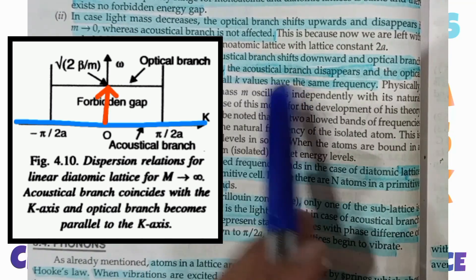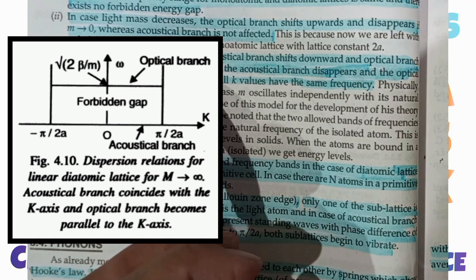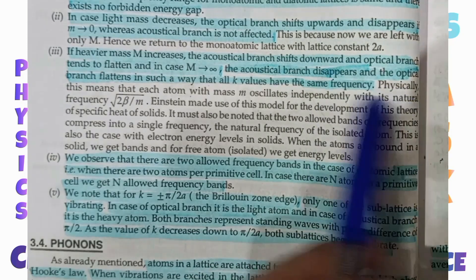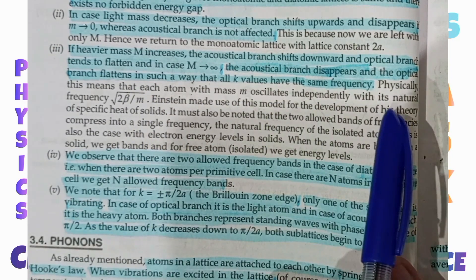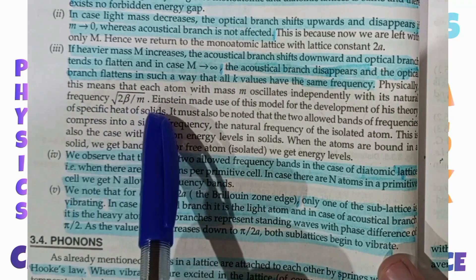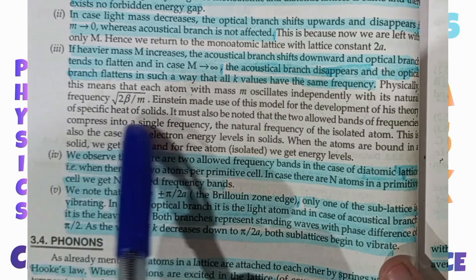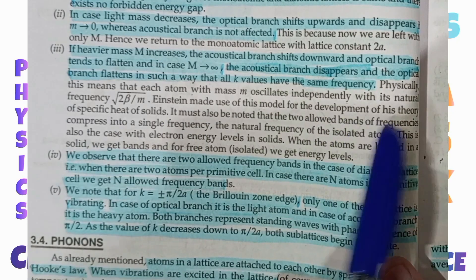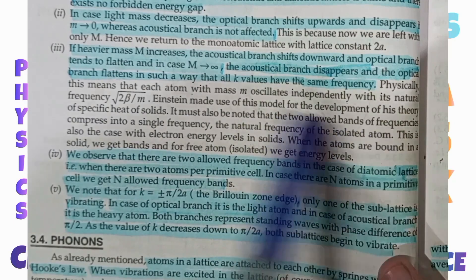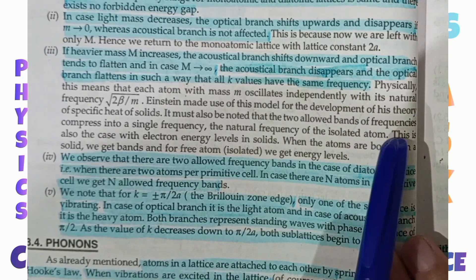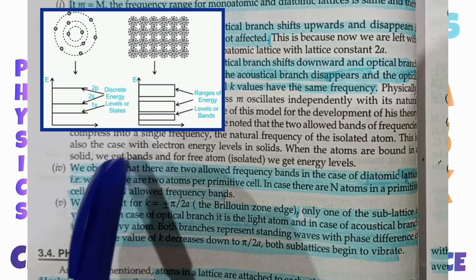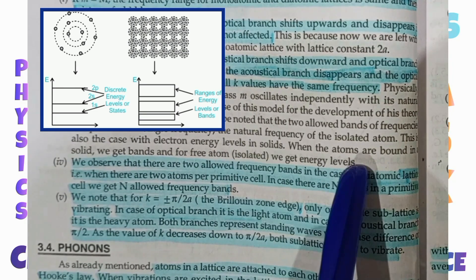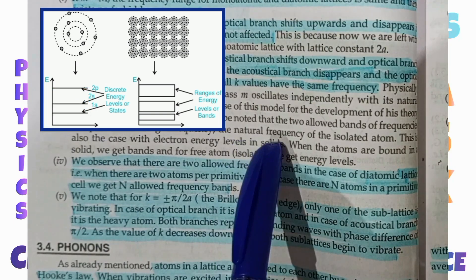Physically, this means that every atom of mass small m will oscillate independently with its natural frequency, which is under root of 2β divided by small m. Einstein used this model to develop the theory of specific heat of solids. We also note that the two allowed bands of frequency are compressed into a single frequency — the natural frequency under root of 2β divided by m — which corresponds to an isolated atom. When the atom is bound in a solid, we get bands of energy; when the atom is free and isolated, we get single energy levels.